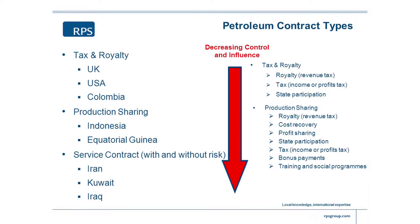So in a tax and royalty system, the state is effectively taking its share through royalty — which you could call a revenue type of tax — and through income or profits tax. Within production sharing, the state takes its share in lots of different ways. It may take a royalty off the top. It will give the contractor its cost recovery, but it will take its share of the profits through the profit sharing. It may well even have the state oil company participate directly in the operations. So to the contractor, the state oil company might as well be the state — its revenue is going to the state operating national oil company and not to the international oil and gas company.